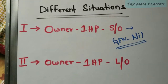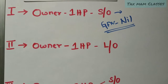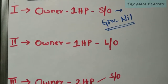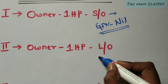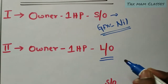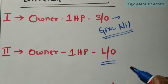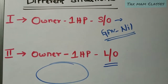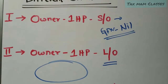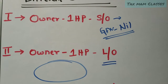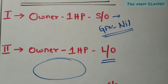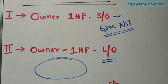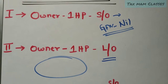In the second situation, when the owner has one house property and that house property is let out, we will compute the gross annual value according to the three steps. We will compute the gross annual value and go ahead with the problem.